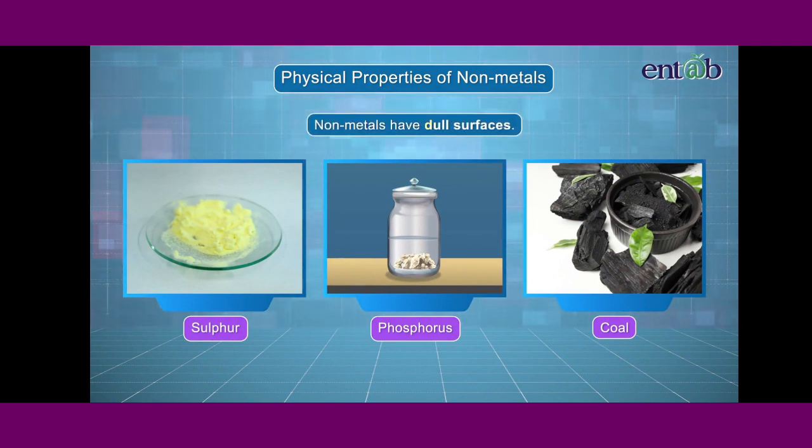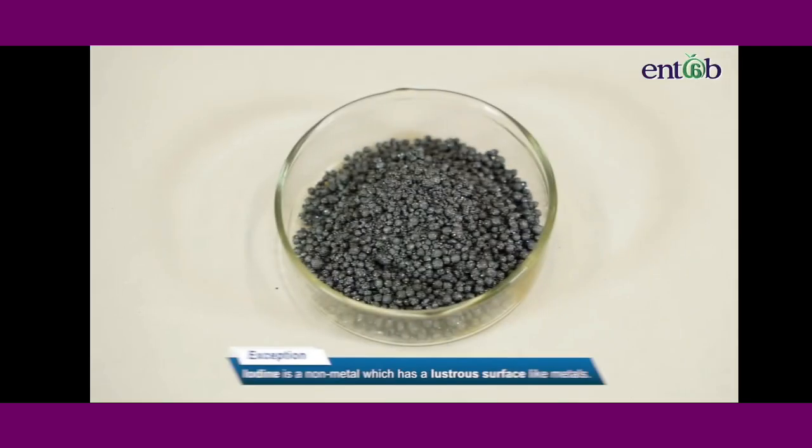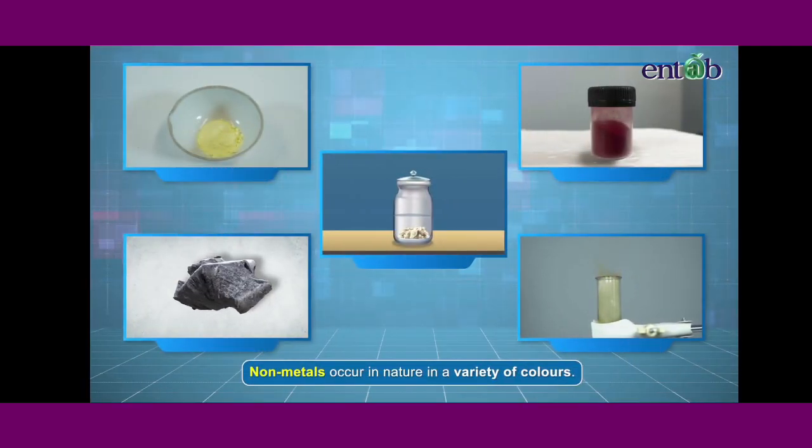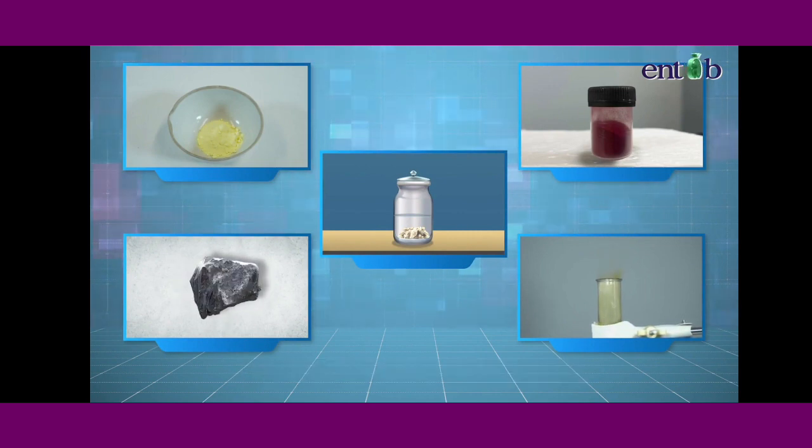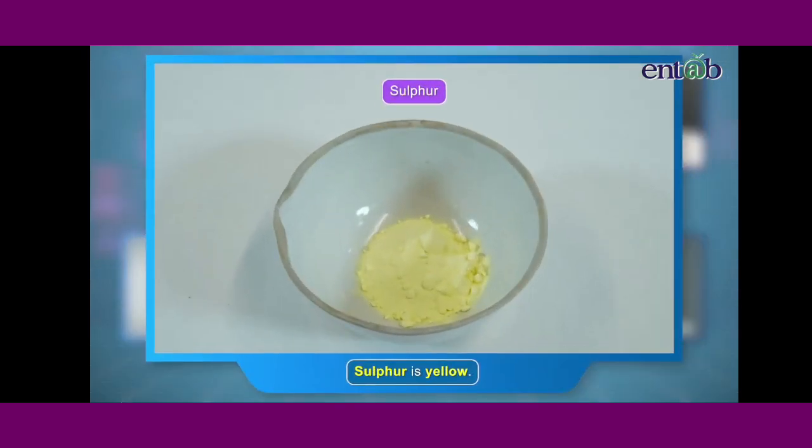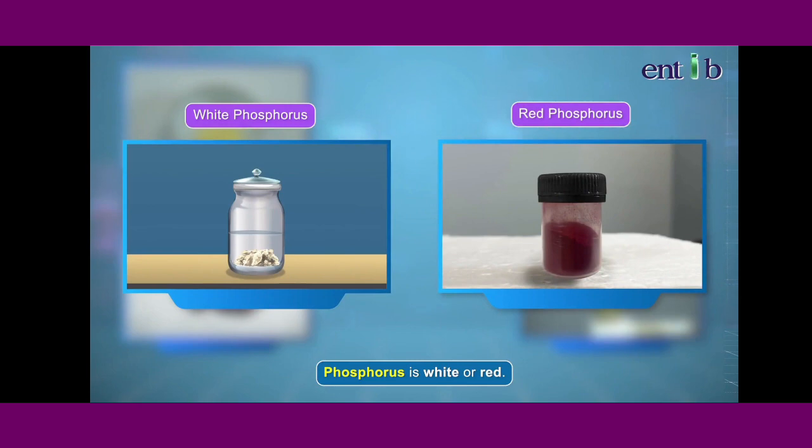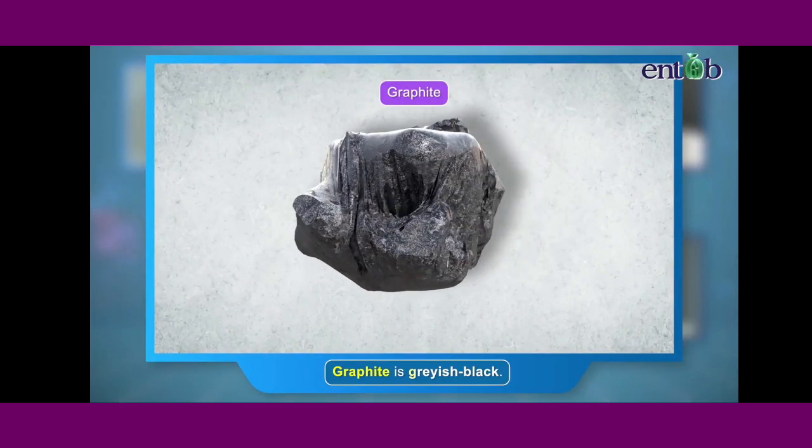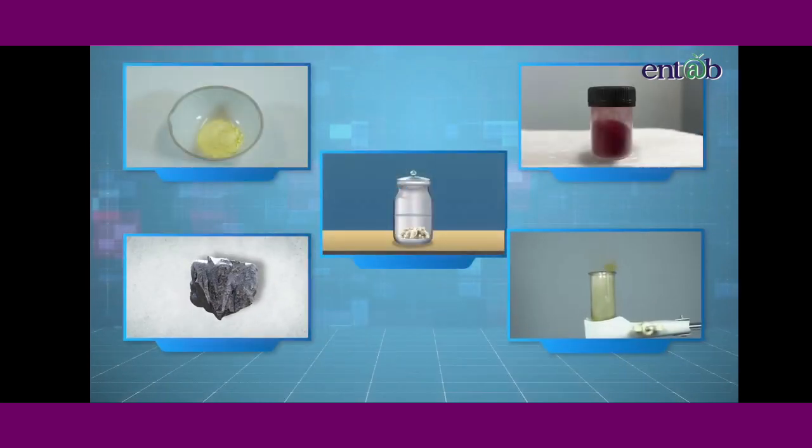They all have dull surfaces except for iodine which has a lustrous surface just like metals. Nonmetals occur in nature in a variety of colors. Sulfur is yellow, phosphorus is either white or red, graphite is grayish black, and chlorine is a yellowish green colored gas.